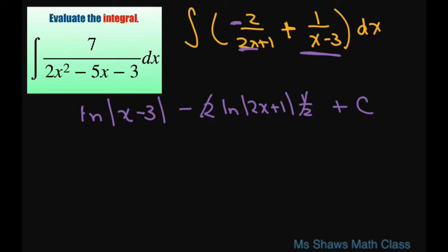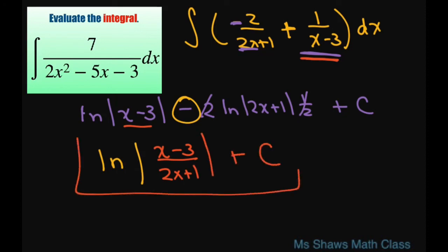Therefore when we condense this I'm going to write this as a single log. Since it's a minus that's why I wrote this one first. You're going to write absolute value of x minus 3 divided by 2x plus 1 plus C. And that is your final answer.